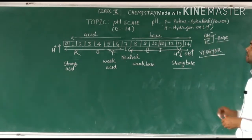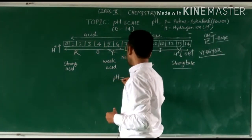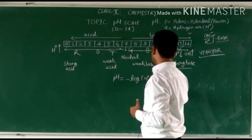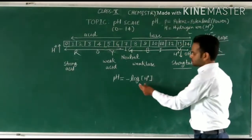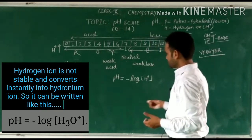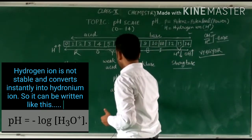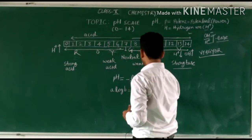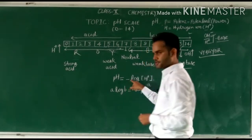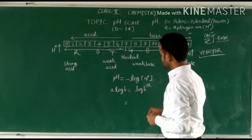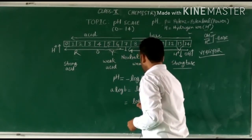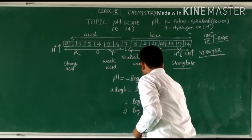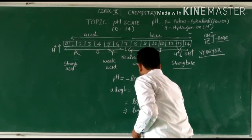This is the pH scale. If we talk about the value of pH, it is defined by the formula: pH = -log[H⁺], where the bracket denotes concentration of H⁺ ion. Using logarithm rules, since there is a -1 coefficient, -1 log[H⁺] becomes log([H⁺]⁻¹), which can be written as log(1 / [H⁺]).